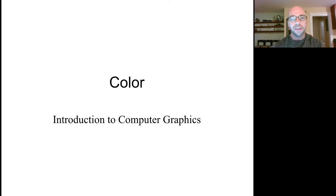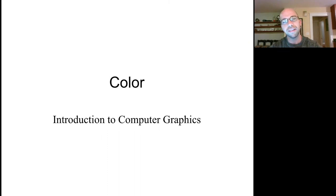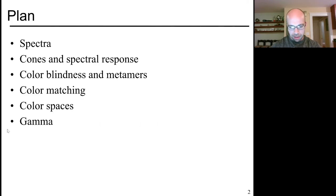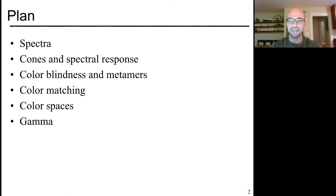Hello, and welcome to another lecture of 6837. Today we're going to continue our discussion of computer graphics, but move into a series of lectures covering important topics in graphics that we can only cover for one lecture at a time. To get started, we're going to talk about color and perception in your eye. Our plan for today is to give an entirely inadequate description of what goes on in a human visual system and how color goes from a light source all the way to your eye.